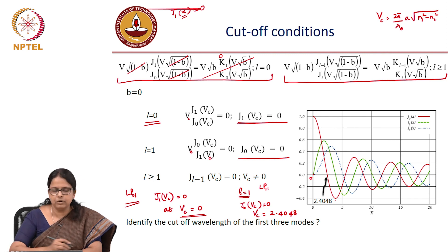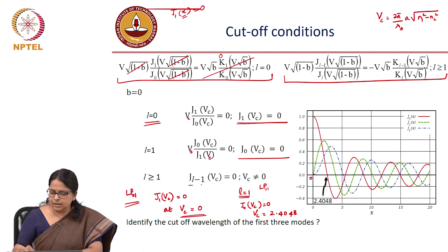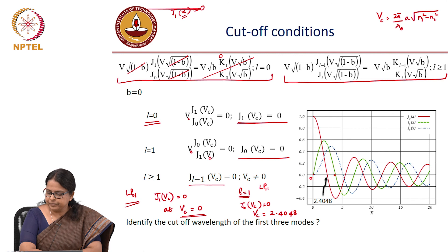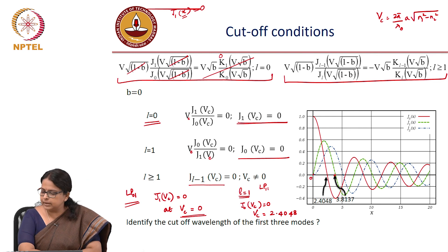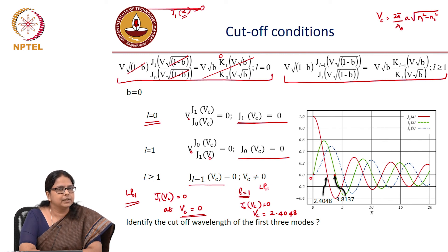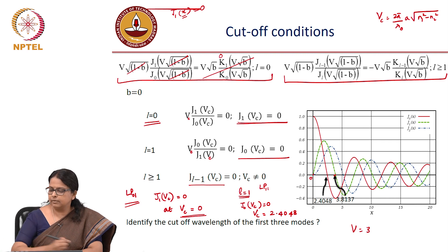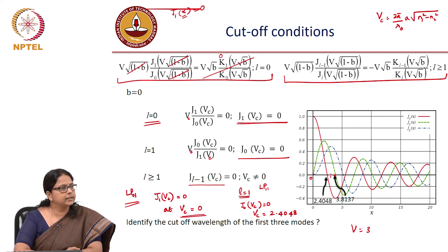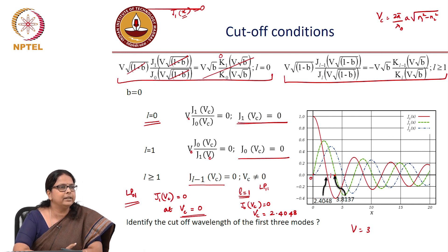If the fiber is to support L equal to 1 mode, V_c should be greater than 2.4048. What is the cutoff condition for L equal to 2 mode? For L equal to 2 I should look at J1, and that gives 3.81. So if your V number is something like 3, the supported modes are LP01 and LP11. Just by calculating your V numbers you can determine which modes are supported by the system — which is why the V number has a lot of relevance.